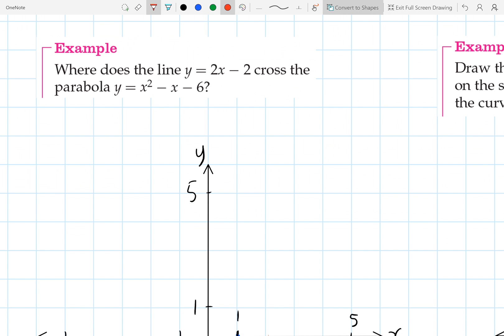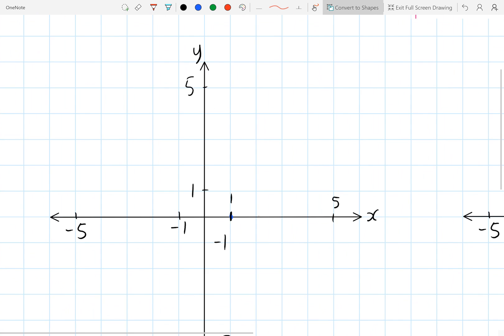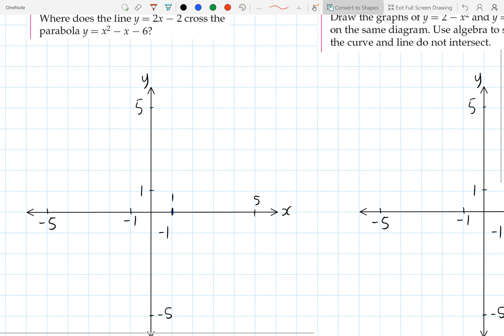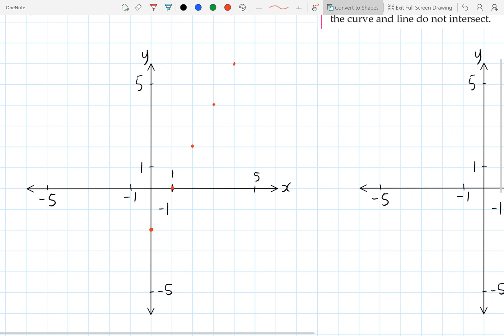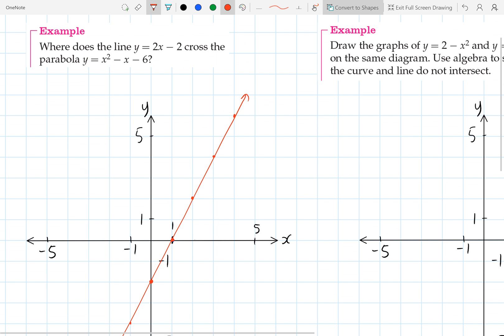So we'll start with plotting the line, which has a y-intercept at y equals negative 2, and it's going up 2 across 1. And we'll follow that pattern down a bit as well. And once we've got enough points, we'll use our ruler to draw a straight line in. Okay, so that's y equals 2x minus 2.